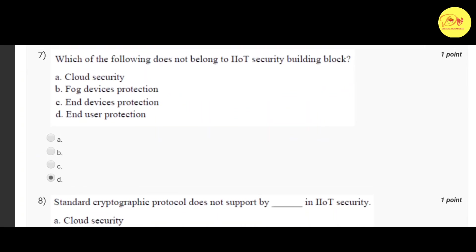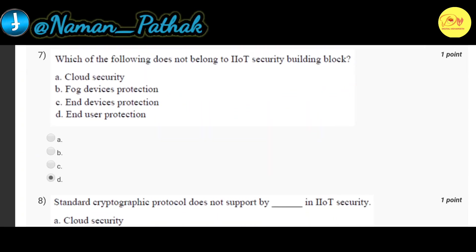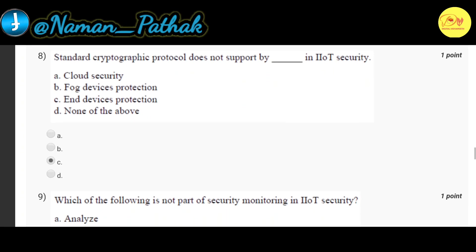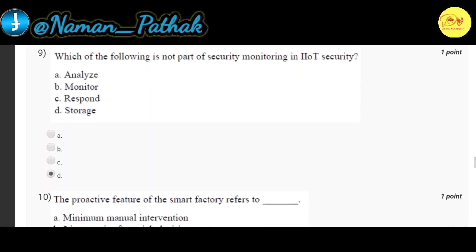Our seventh question is: which of the following does not belong to the IIoT security building block? The correct option is D — end user protection. Our eighth question is: which cryptographic protocol is not supported in IIoT security? The correct option is C — end devices protection.